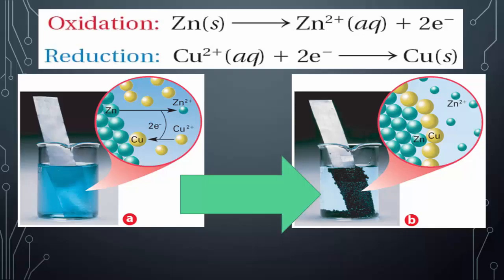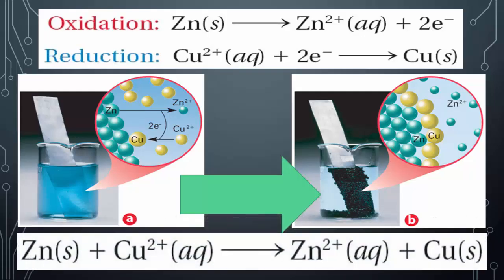The zinc actually goes into the solution, clearing it up and making it less blue. The copper gets out of the solution and attaches itself in a pure elemental form. So the entire half reaction, after we simplify and remove the electrons, shows that neutral zinc plus copper ions will make zinc ions and pure copper, which we see in both picture A and picture B.